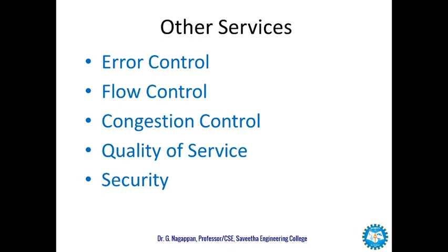Congestion control addresses a situation in which too many datagrams are present in the internet. Congestion may occur when the number of datagrams sent by source computers exceeds the capacity of the network. In this situation, some routers may drop datagrams; however, as more datagrams are dropped, the situation can become worse due to error control mechanisms at the upper layer, so congestion must be controlled.